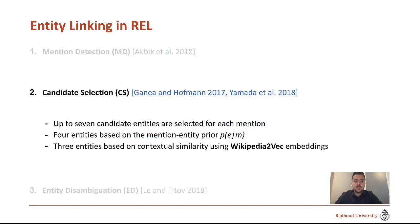Our second step consists of candidate selection, developed by Kaneia and Hoffman et al. in 2017 and Yamada et al. in 2018. Here we select up to seven candidate entities for each mention: first, three entities based on contextual similarity using Wikipedia to VAC embeddings, after which we select an additional four entities based on mention-entity priors using our PEM index.